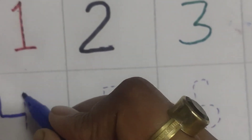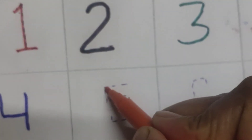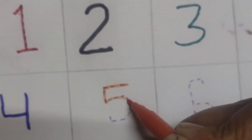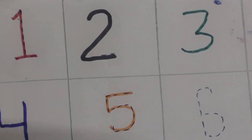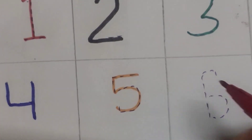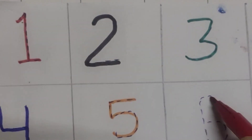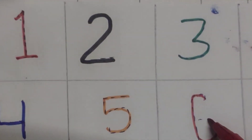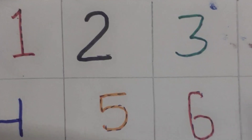Four — four means jar. Five — five means five. Six — six means six.